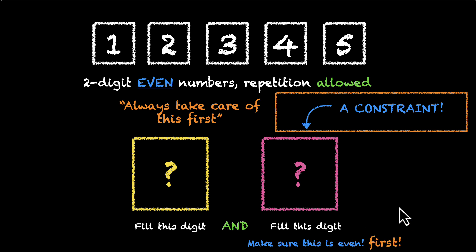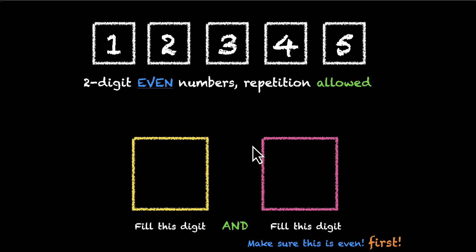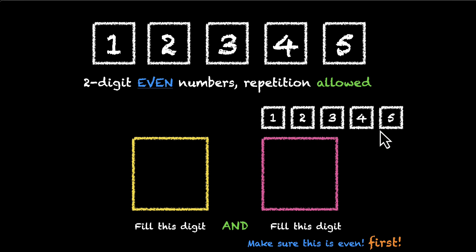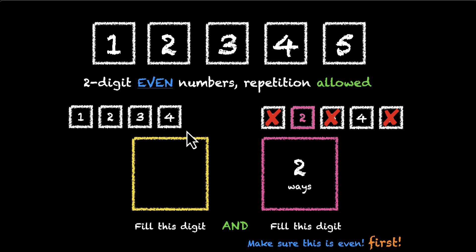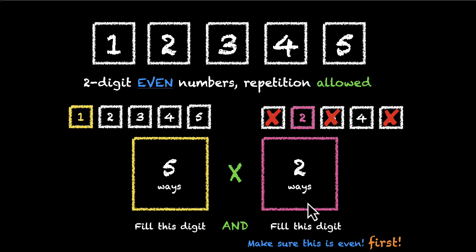So we'll make sure the last digit is even first. How many ways to fill the pink box? We have 1, 2, 3, 4, 5 and we have to make it even. So you can't have 1, 3, or 5 — you can pick from 2 and 4. So there are two ways to do this. For the yellow box, because repetition is allowed, we have all five digits available — so five ways. We multiply: 5 times 2 gives us 10 such numbers.